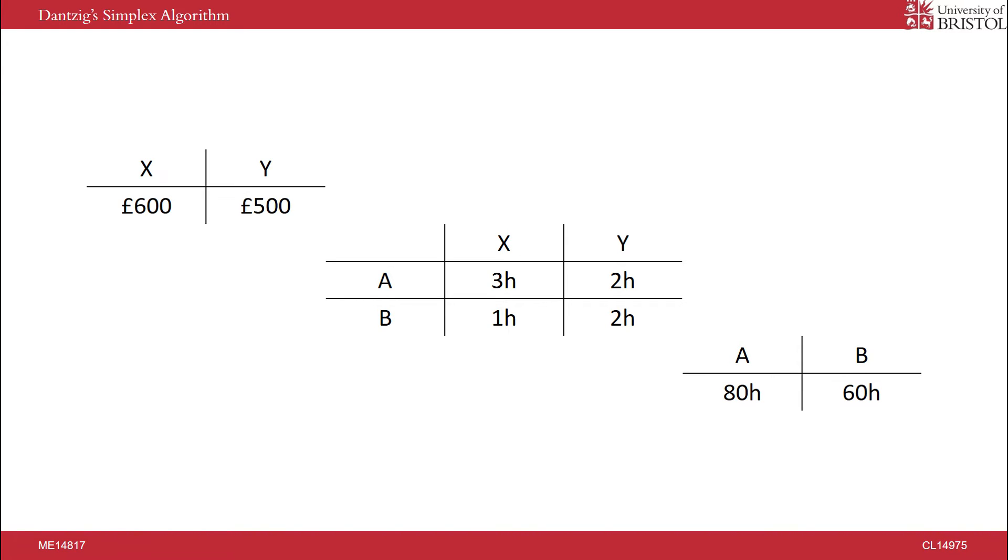Also, product X sells for £600 and Y sells for £500. This can be modeled by this linear program. Our objective function is P equals 600X plus 500Y. We would like to maximize this to make the most profit.